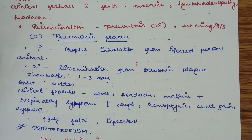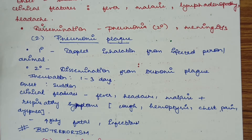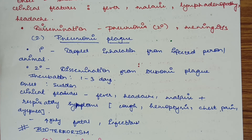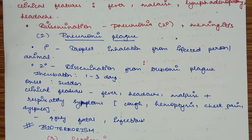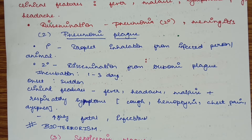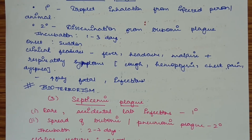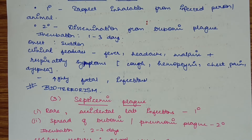Pneumonic plague may be primary or secondary. Primary pneumonic plague is transmitted by droplet inhalation from an infected person — if a person is infected and contaminates another normal person with droplets by coughing, sneezing, or fomite-borne transmission, the normal person acquires the infection. Secondary transmission is by dissemination from bubonic plague; if bubonic plague is not treated, it can become pneumonic. The incubation period is 1 to 3 days. Onset is sudden. Clinical features include fever, headache, malaise, and lymphadenopathy, similar to bubonic plague.